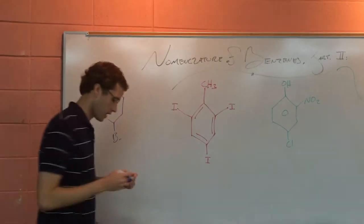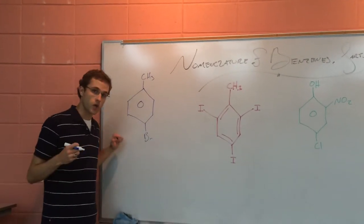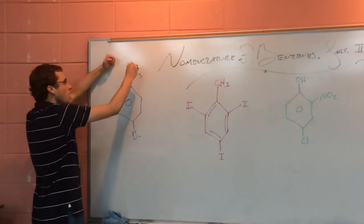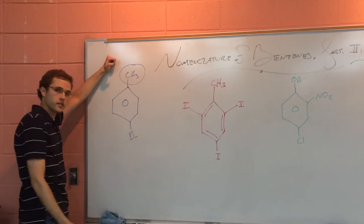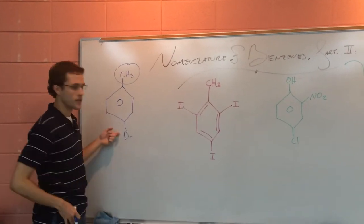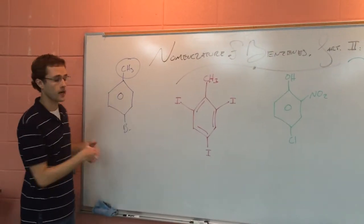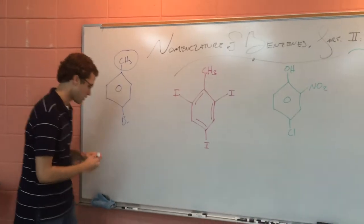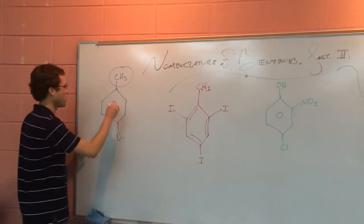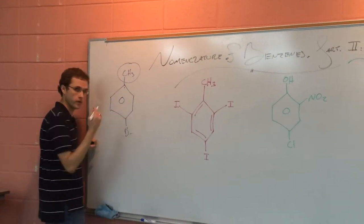We'll see some things we've talked about in the last video. In the last video we had a compound that was a toluene compound — toluene is just whenever you have a benzene ring with a methyl group attached. So here we have bromine attached to the opposite side of toluene, to the side opposite to the CH3.